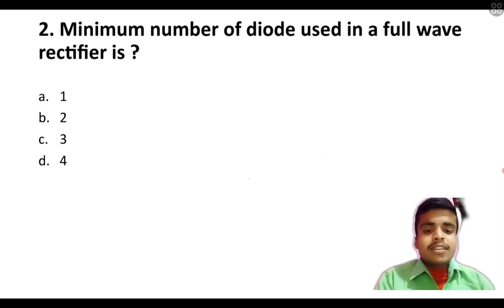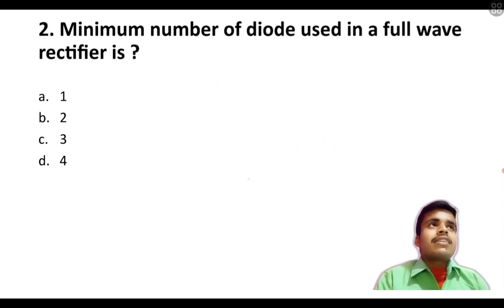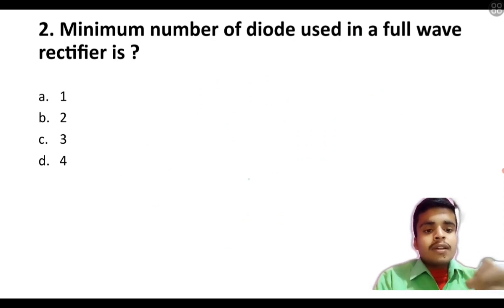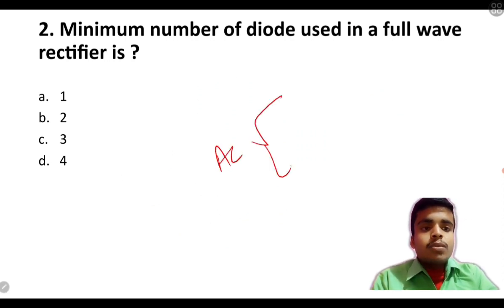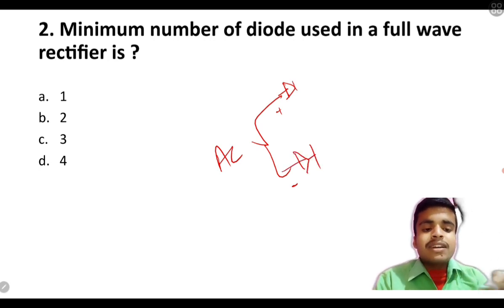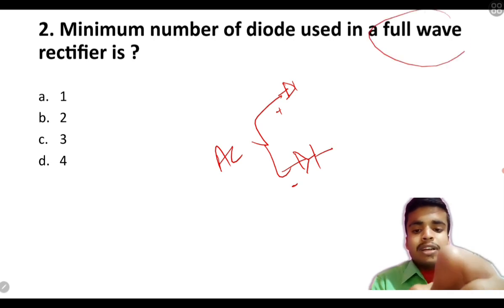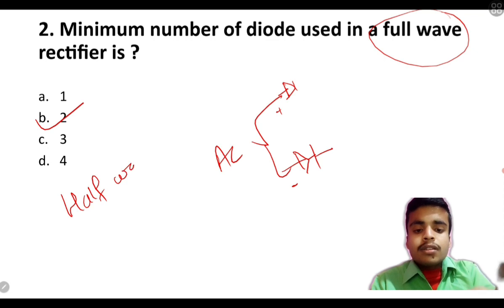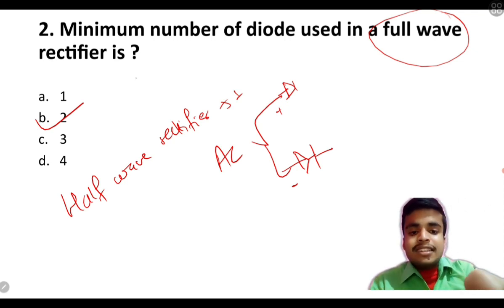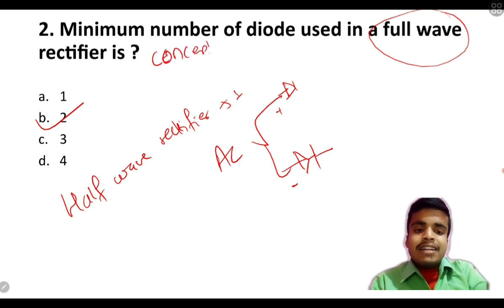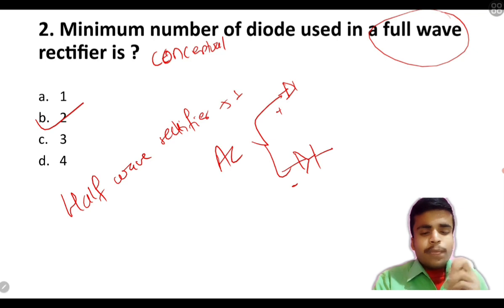Next question: the minimum number of diodes used in a full wave rectifier. In a rectifier circuit, we convert AC to DC. The AC has live and neutral, so we need diodes — one here and one here in the circuit. The answer is two diodes for a full wave rectifier. This is also mentioned in Conceptual CEO — not a promotion, just a fact.